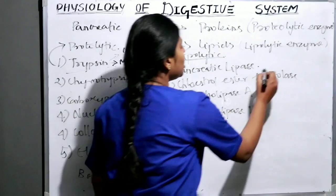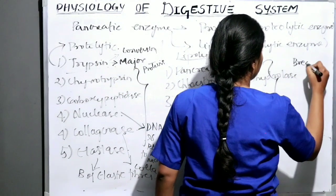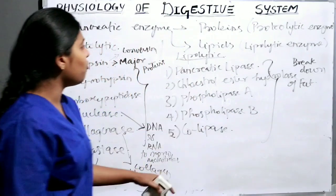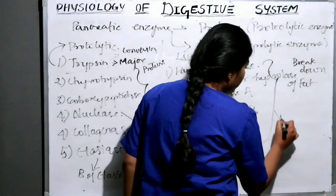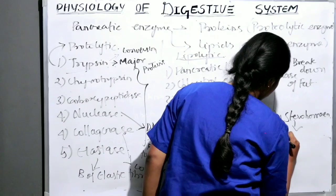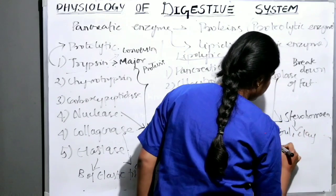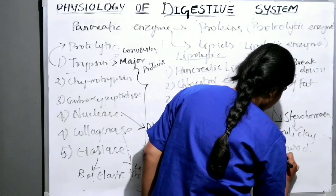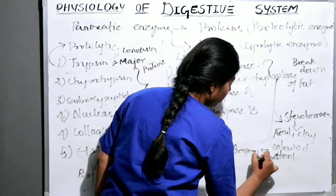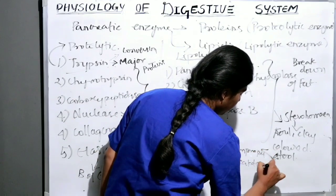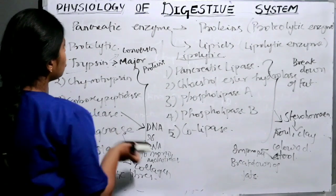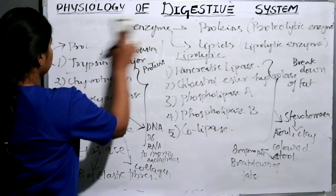The lipolytic enzymes all help in the breakdown of fats. If there is any deficiency in lipolytic enzymes, it will lead to steatorrhea, that is foul, clay-colored stool, which occurs due to the improper breakdown of fats. That covers all the enzymes present in the pancreatic juice.